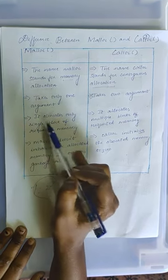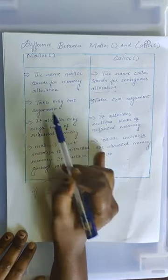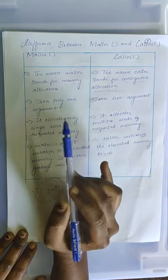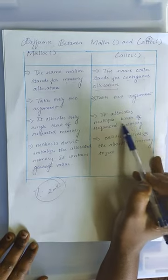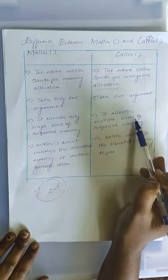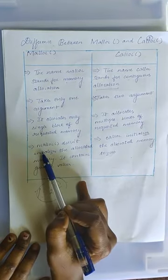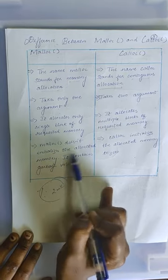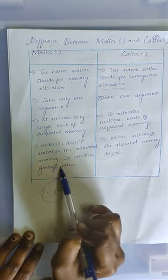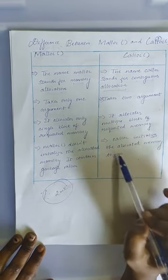The next difference is, MALLOC allocates only single block of requested memory because it takes only one argument. Whereas, CALLOC allocates multiple blocks of requested memory. The last difference is MALLOC doesn't initialize the allocated memory and contains only garbage values. Whereas, CALLOC initializes the allocated memory to zero.